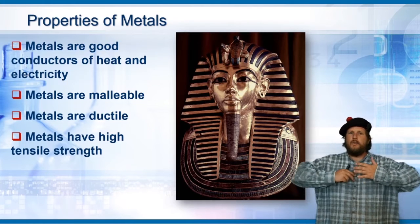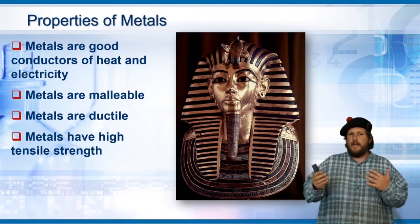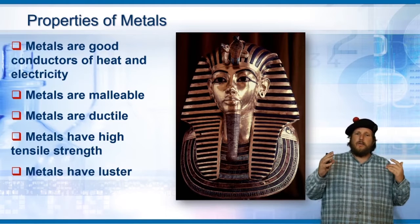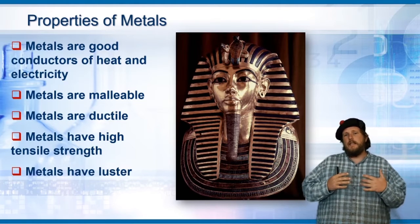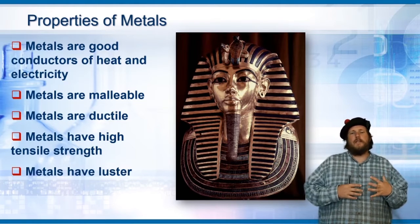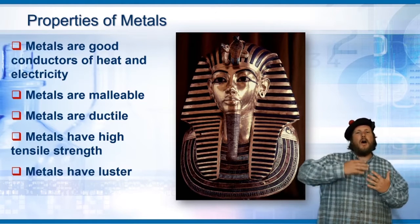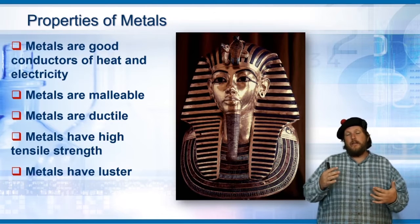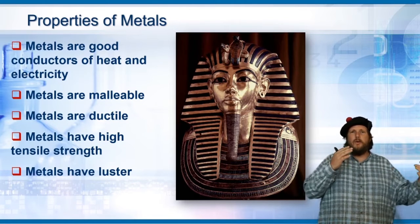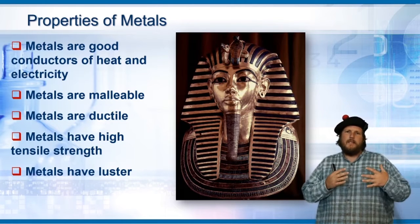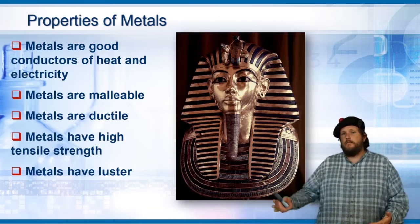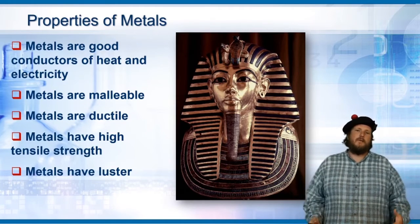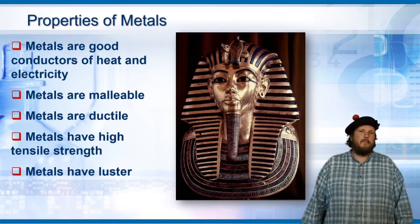Metals are shiny and have luster because of those overlapping p and d orbitals and the broad range of energies they can interact with. As light comes in, it can interact with and reflect most all colors of light, and that's why you get that luster from metals.